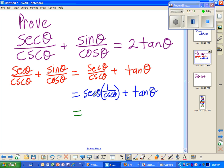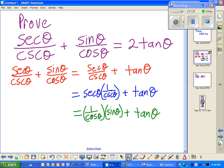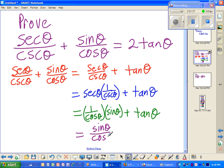Now, I'm going to change these over to sines and cosines. Secant is one over cosine of theta. One over cosecant is the same as sine of theta. So now you can see I have sine of theta over cosine of theta plus tangent of theta.